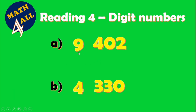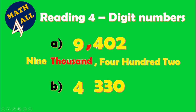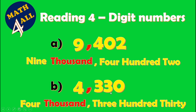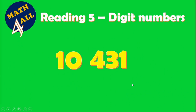Another example with four-digit numbers. Count three digits — one, two, three — then put a comma, called thousand. Read: nine thousand four hundred two. Another example: count three, put comma, read from the left side — four thousand three hundred thirty.